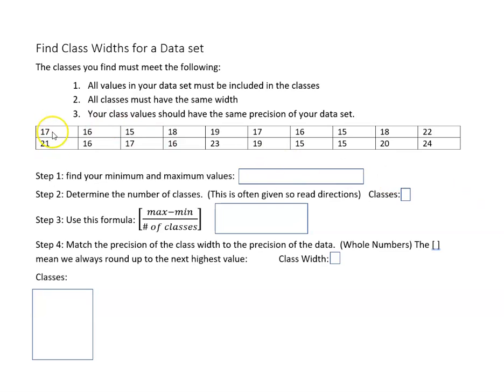In this first example, our data set has whole numbers, and so what we want to do first is determine what the minimum and maximum values are. The minimum value—this is a bunch of people who came in for driver's ed—the minimum value is 15 and the maximum value is 24.